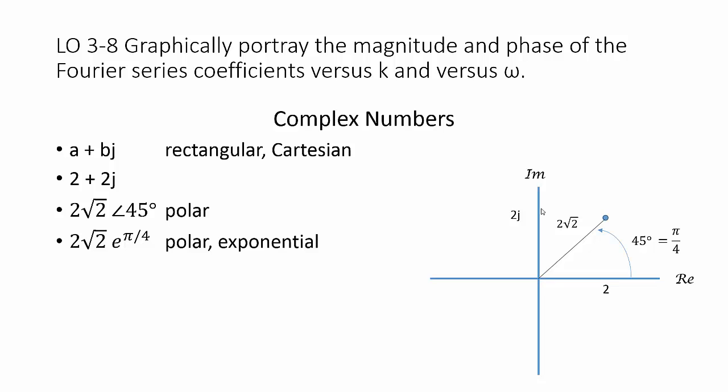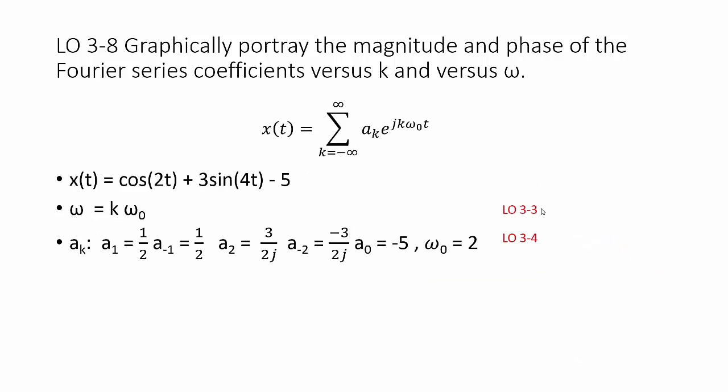We quite often use radians instead of degrees, so that angle becomes pi over 4. Here's an example from the learning outcome 3.4 video: x of t equals cosine of 2t plus 3 sine of 4t minus 5. We calculated in that example that the a sub k values are as listed, with a fundamental frequency of 2, and all other a sub k are 0.